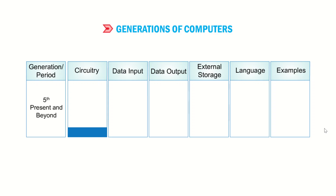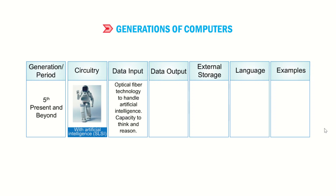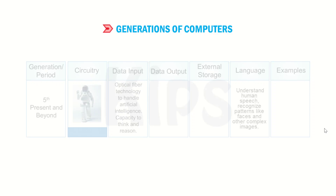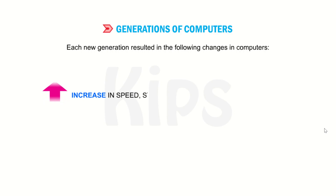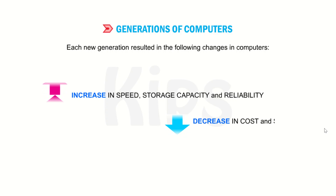Fifth generation computers are expected in the near future. They have circuitry with artificial intelligence. Data input operation through optical fiber technology to handle artificial intelligence, with the capacity to think and reason. The language can understand human speech and recognize patterns like faces and other complex images. Each new generation resulted in increases in speed, storage capacity and reliability, with decreases in cost and size.